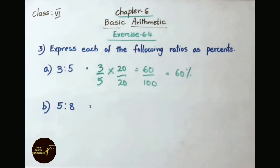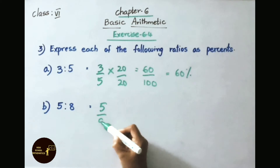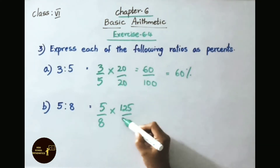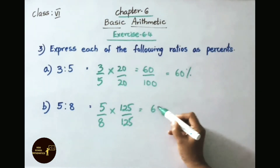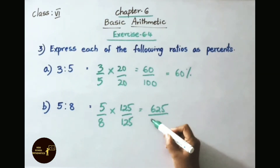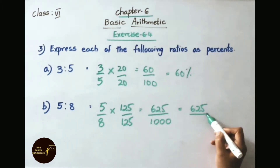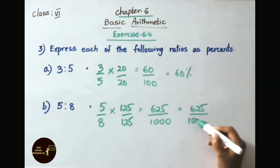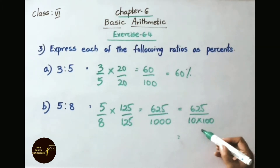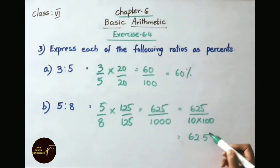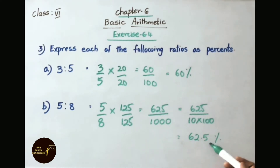Question B: 5 is to 8. That can be written as 5 by 8. Since 8 times table cannot give 100 directly, multiply numerator and denominator by 125. 5 into 125 is 625, and 8 into 125 is 1000. That gives 625 by 1000, which equals 62.5 by 100, so the answer is 62.5 percent.